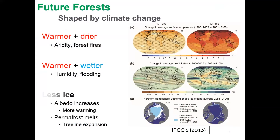Our future forests are going to be shaped by climate change. Things are getting warmer and drier — we're seeing increased aridity and forest fires — but we also see increased humidity and flooding in some places. We're seeing less ice, albedo increases, more warming, permafrost melting, treeline expansion, and many of these processes have consequences for our trees and also mycorrhizal fungi.